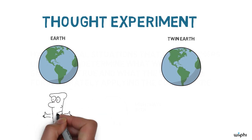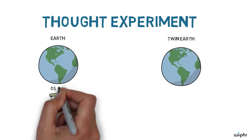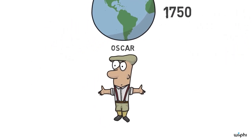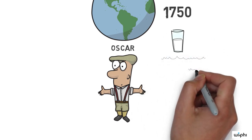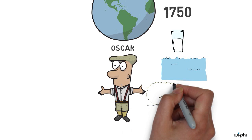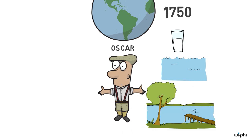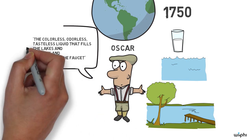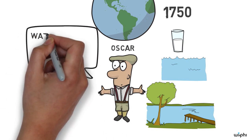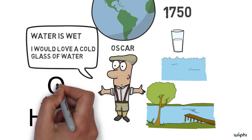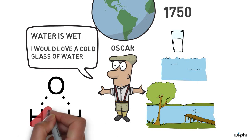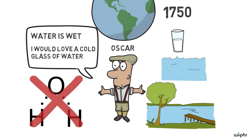Putnam asks us to imagine the following situation. Imagine a person named Oscar living on Earth in 1750. Oscar, like all of us, has come in contact with water. He's had some to drink, he's swum in it, he's admired it flowing in a river. He thinks of it as something like the colorless, odorless, tasteless liquid that fills the lakes and streams and comes out of the faucet. Oscar thinks and sometimes says things like, water is wet, and I would love a cold glass of water. Oscar doesn't think things like, water is H2O, since the chemical structure of water has not yet been discovered.